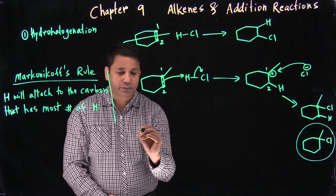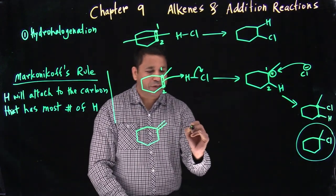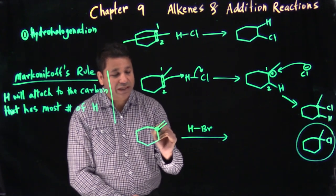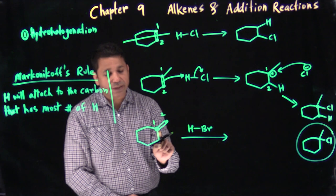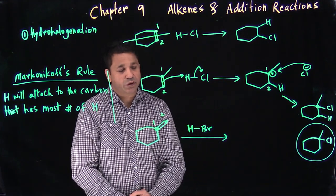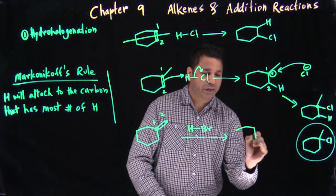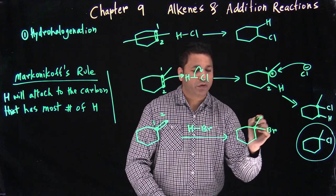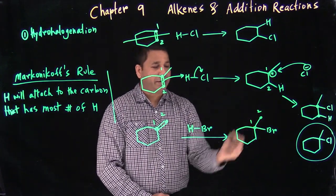Let's do another example with HBr. Carbon-1 and carbon-2 are not the same. Carbon-2 has the most hydrogens, so H goes to carbon-2 automatically, and Br goes to carbon-1. That's the product. You don't have to write out all the hydrogens, but you can keep track of them to avoid losing them.